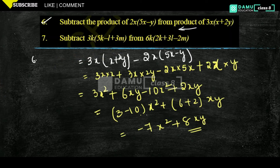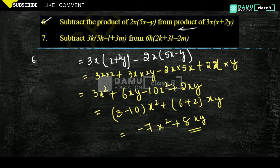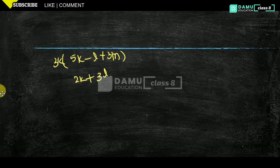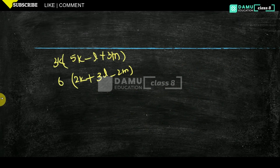The question is: subtract from 6k. So let's take 2k plus 3l minus 2m — that is 6k into 2k plus 3l minus 2m. So actually what is given is subtract 3k from this.